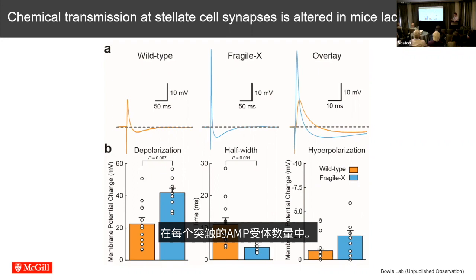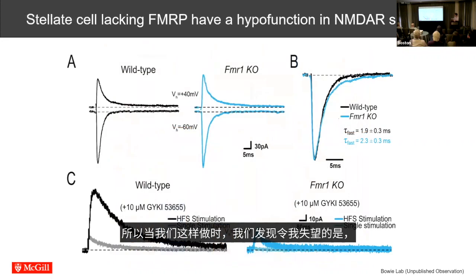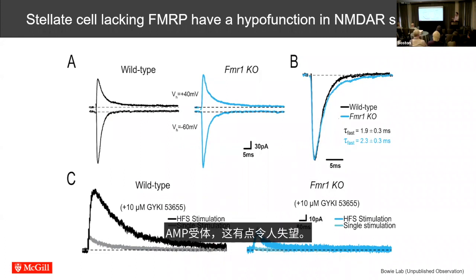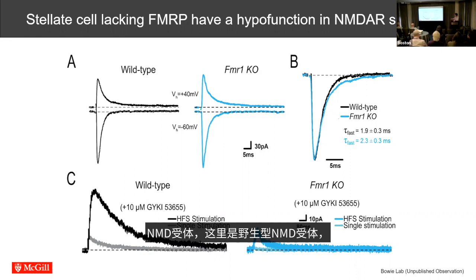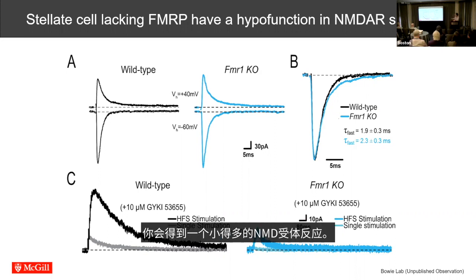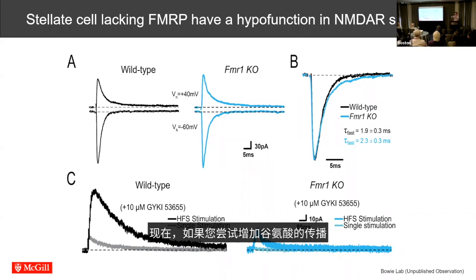The interesting thing was when we looked at the NMDA receptors. Here's the wild-type NMDA receptor: you get this enormous response if you drive the spillover of glutamate from these synapses. But in fragile X — and this is the link to GRIN disorders — just like you see in hypofunctioning GRIN disorders, you get a much, much smaller NMDA receptor response. If you try to augment glutamate transmission so it spills over further, it doesn't change the amplitude, so it's not due to misplacement of NMDA receptors.